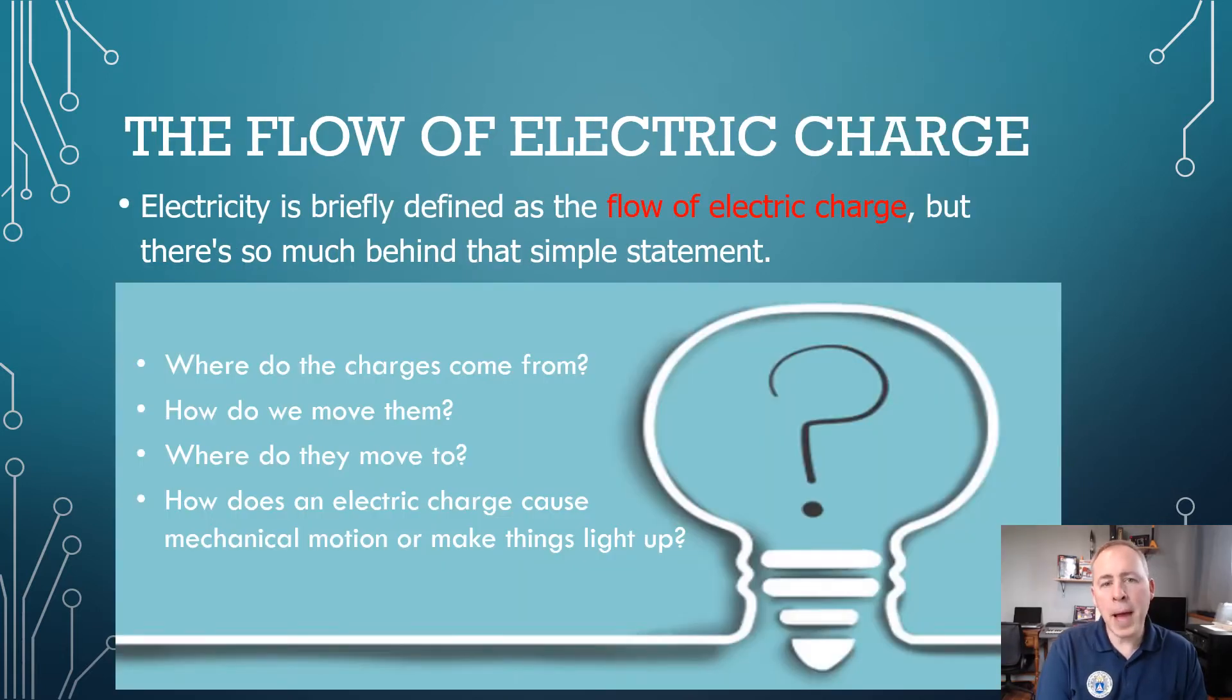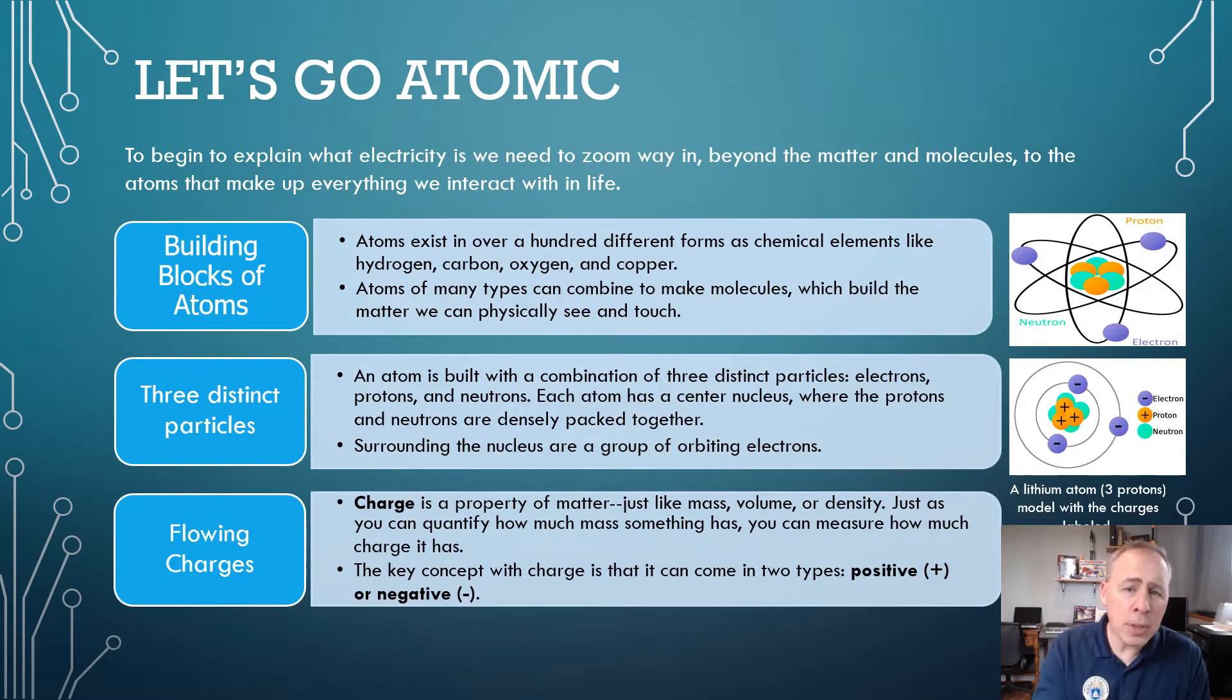So let's talk about the flow of electric charge. Electricity is briefly defined as the flow of electric charge. But there's so much more behind that simple statement, such as where do the charges come from? How do we move them? Where do they move to? And how does an electric charge cause a mechanical motion or make things light up? So to answer those questions, we need to go to the atomic level.